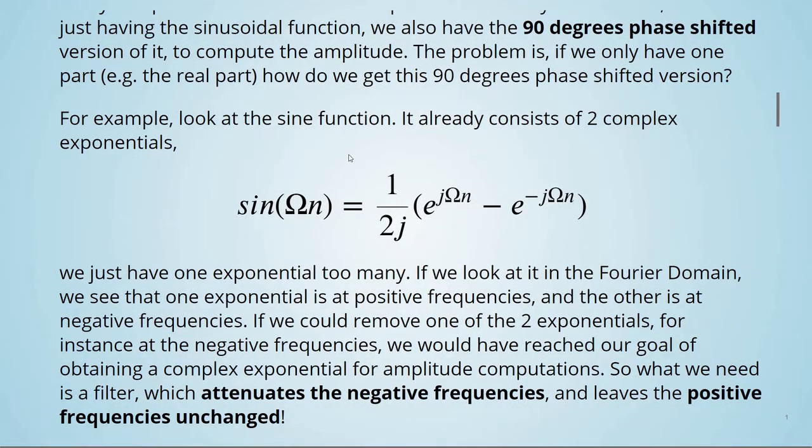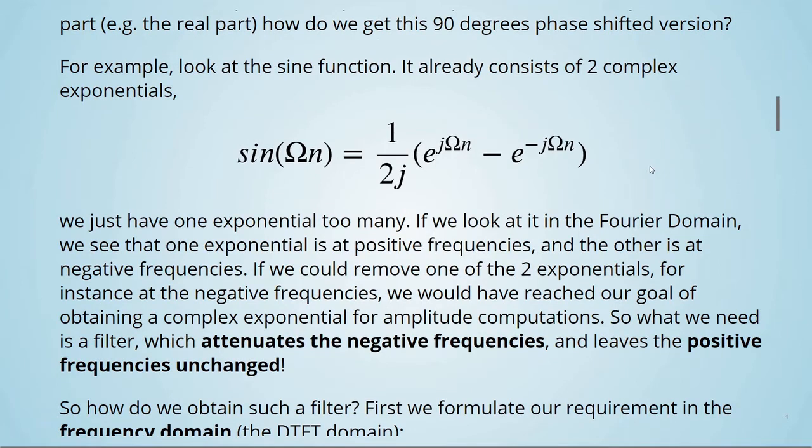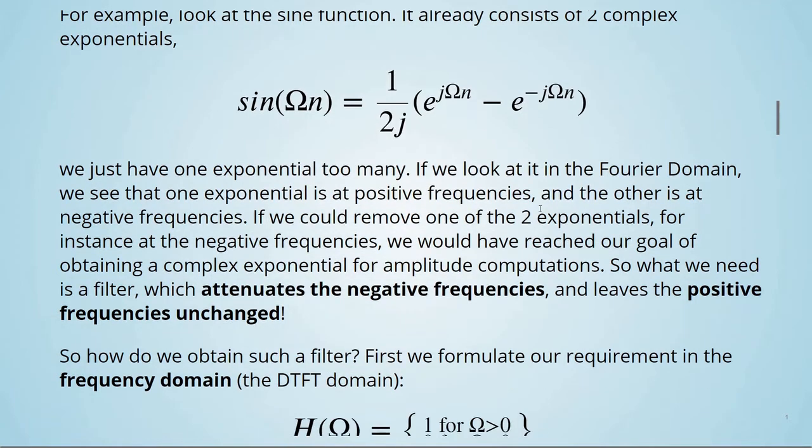For example, look at the sine function. It already consists of two complex exponents. The sine function equals 1 divided by 2j, times e to the jΩn minus e to the minus jΩn. So we just have one exponential too many. If we look at it in the Fourier domain, we see that one exponential is at positive frequencies, and the other is at negative frequencies. If we could remove one of the two exponents, for instance at the negative frequencies, we would have reached our goal of obtaining a complex exponent for amplitude computations.